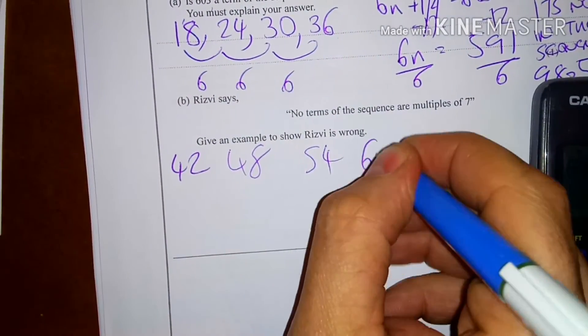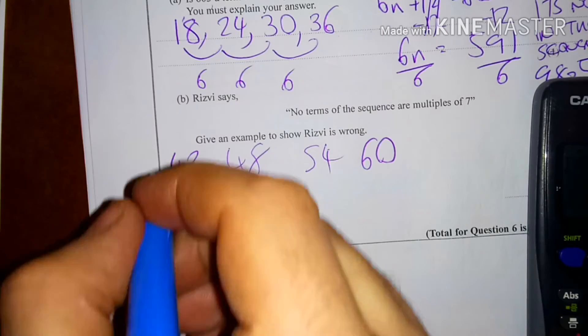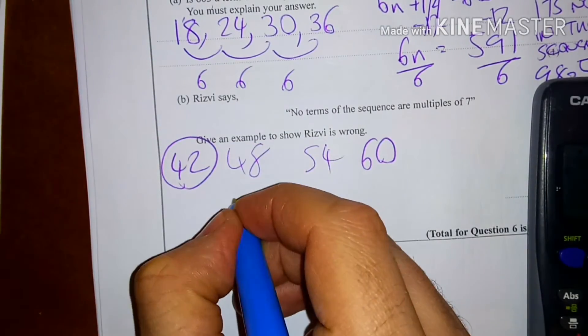6 again. 60. And ask yourself, is any of these numbers in the 7 times table? And the answer is 42 is in the 7 times table. So, 42.